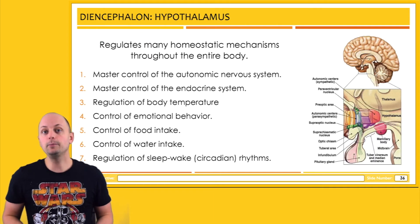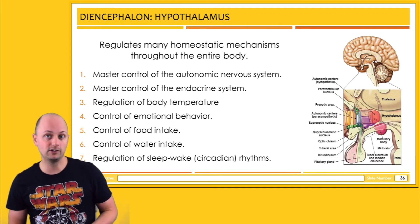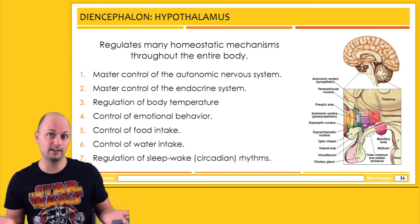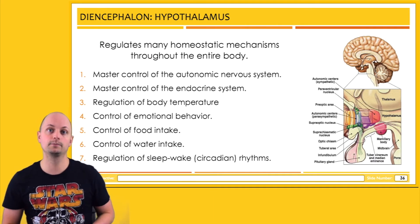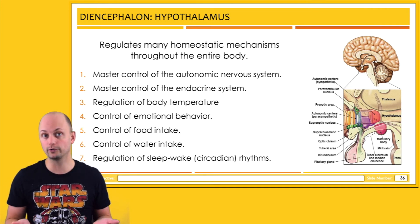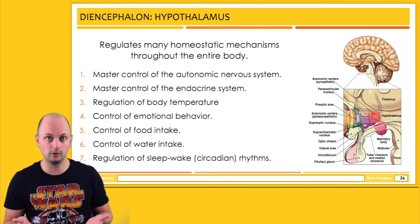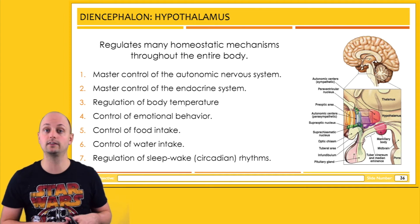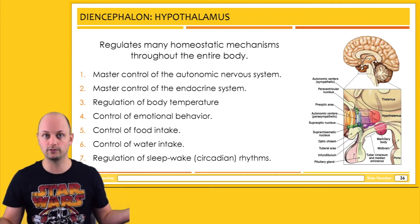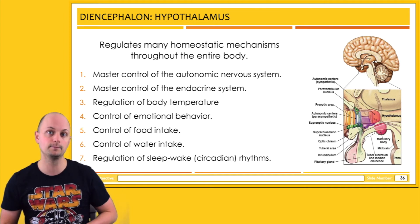The hypothalamus will be covered in our last unit on the endocrine system, because the hypothalamus is a really important controller for the endocrine system. It produces a lot of chemical messengers that regulate all sorts of chemical processes inside the body.